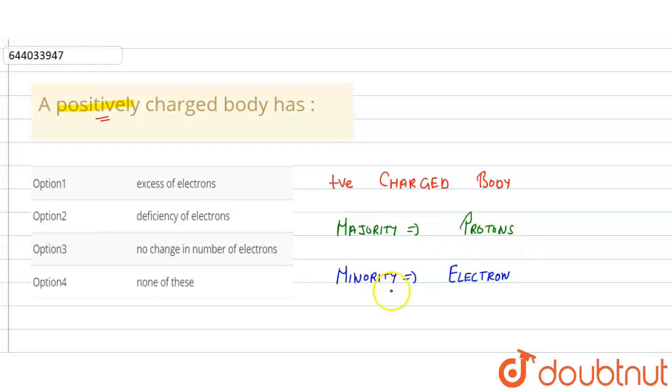...are protons and the minority charge carriers are electrons. So here we can say that in a positively charged body we are having excess of protons and deficiency of electrons. In option 1, it's given excess of electrons, so no, it's wrong.